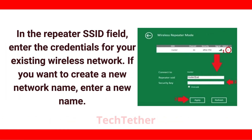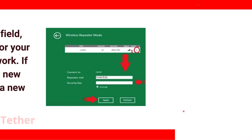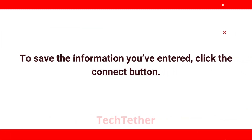In the repeater SSID field, enter the credentials for your existing wireless network. If you want to create a new network name, enter a new name. To save the information you've entered, click the connect button.